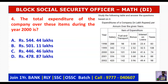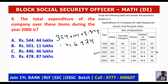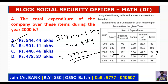Next question — question four. The total expenditure of the company over these items during the year 2000. Three hundred one plus 3.84 plus 41 plus 41.6 plus 74 — equals 544.44. Option A, answer. Five forty four point four four — answer.